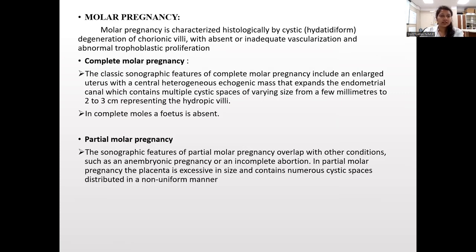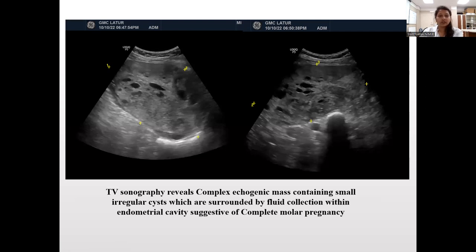Molar pregnancy can be complete or partial. The classic sonographic features of complete molar pregnancy include an enlarged uterus with a central heterogeneous echogenic mass that expands the endometrial cavity, containing multiple cystic spaces of varying size from a few millimeters to 2 to 3 centimeters, representing hydropic villi. In complete mole, a fetus is absent. Partial molar pregnancy overlaps with other conditions such as anembryonic pregnancy or incomplete abortion; the placenta is increased in size and contains numerous cystic spaces distributed in a non-uniform manner. This transabdominal sonography reveals a complex echogenic mass containing small irregular cystic spaces surrounded by fluid collection in the endometrial cavity, suggestive of complete molar pregnancy.